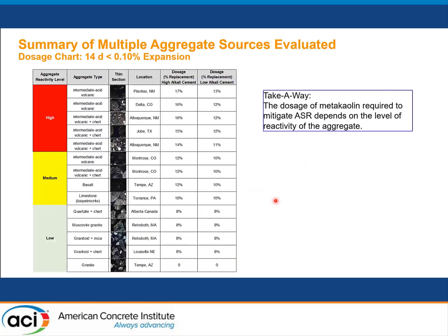As mentioned, using a total of 16 different reactive aggregates and testing at two different cements, this table summarizes all the results according to the C1567 test method, to define the dosages of MetaKaolin required to achieve less than 0.1% expansion at 14 days. It's a pretty busy table, but the key takeaway is that the dosage of MetaKaolin required to mitigate ASR is very much dependent on the level of reactivity — ranging from 8% up to about 17% for very reactive aggregates.